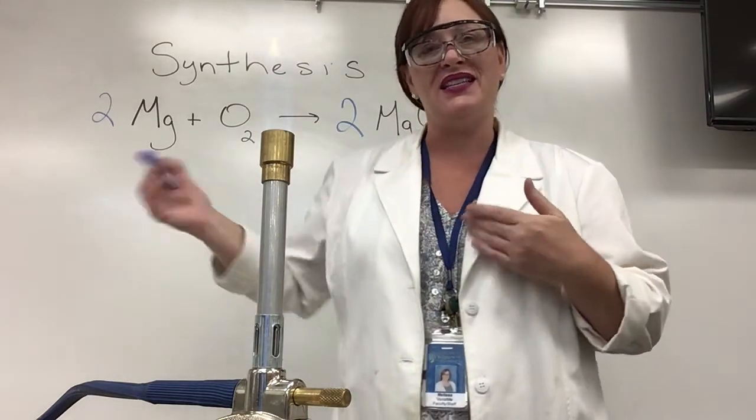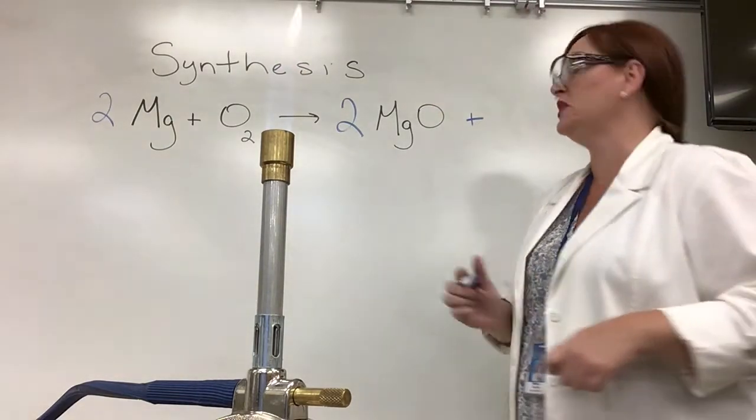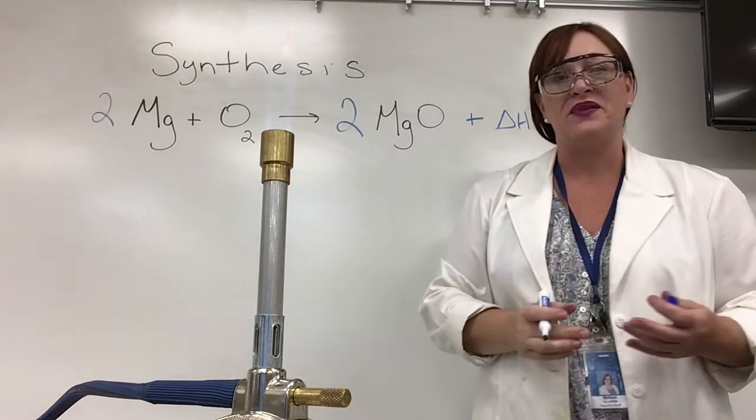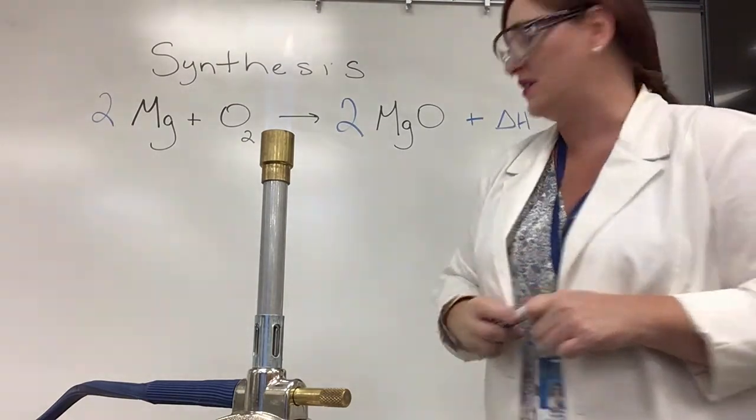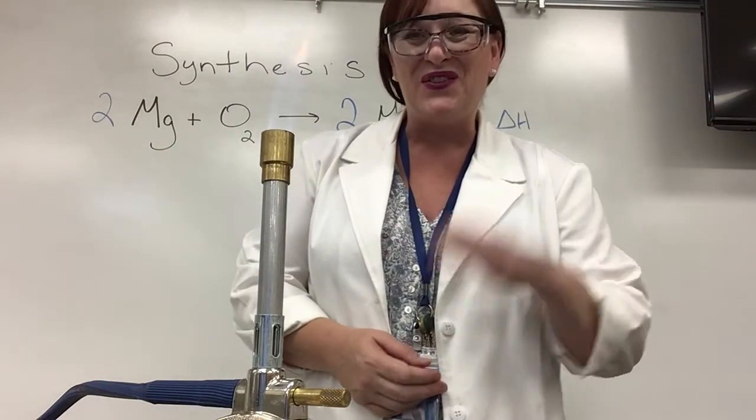So if I wanted to include that idea in this equation, the way we do that is we put a little plus symbol and we can put delta H energy and that tells me that it's producing energy in the form of heat or light which is what we call an exothermic reaction. All right thanks for joining me.